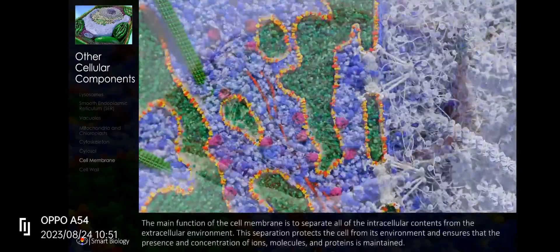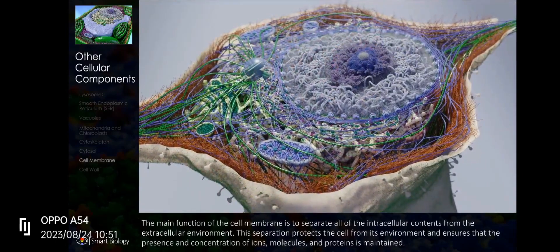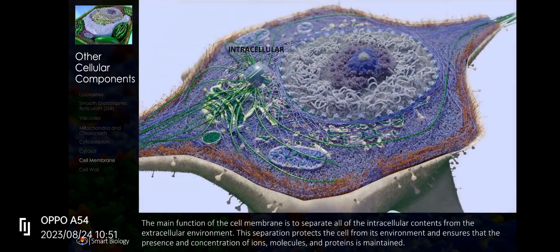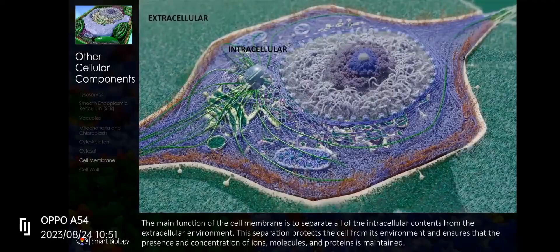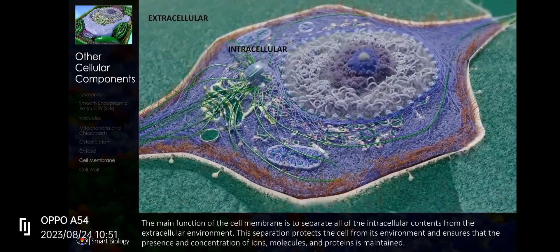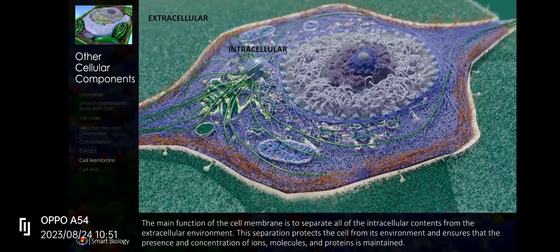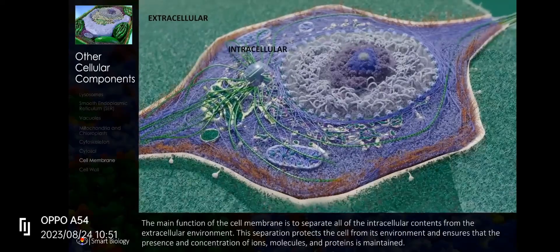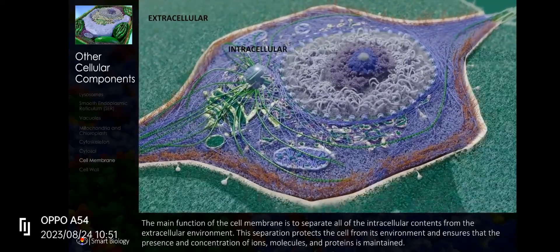The main function of the cell membrane is to separate all of the intracellular contents from the extracellular environment. This separation protects the cell from its environment and ensures that the presence and concentration of ions, molecules, and proteins is maintained.